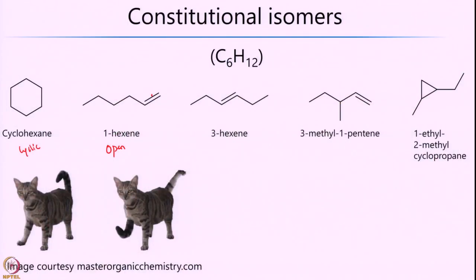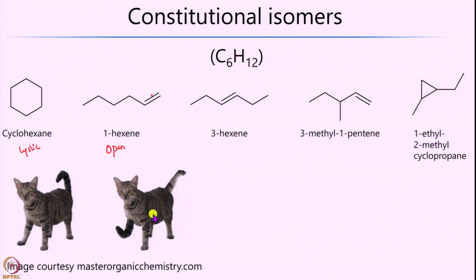To help understand constitutional isomers better, consider the analogy of cats. The one on the left is a normal cat with 4 legs and a tail. To show constitutional isomers, you take the same cat, chop off one leg and put it in the position of the tail, and put the tail in the position of a leg. These are classic examples of constitutional isomers — to go from one form to the other, you need to break some bonds and make new bonds at different places.